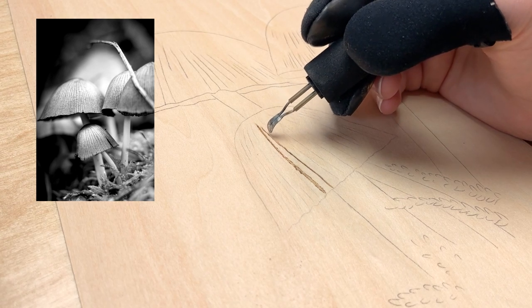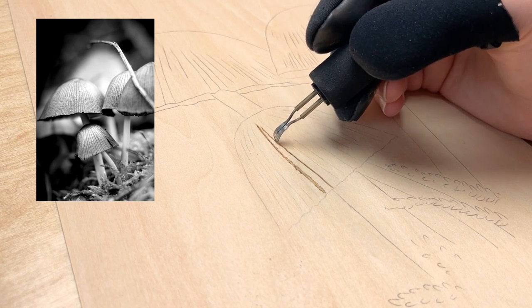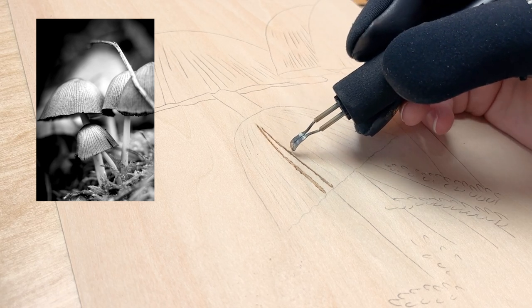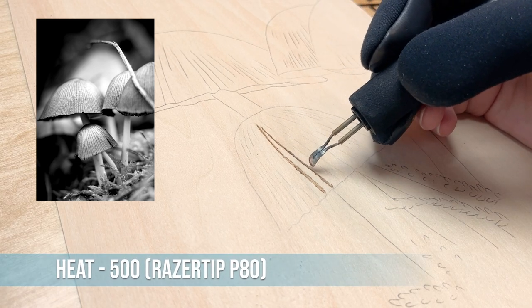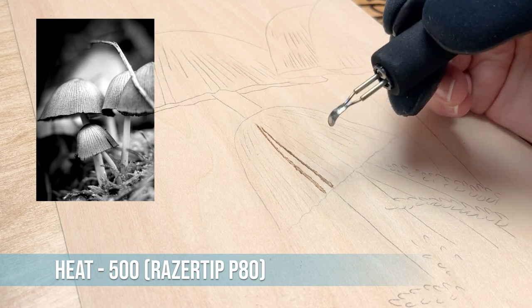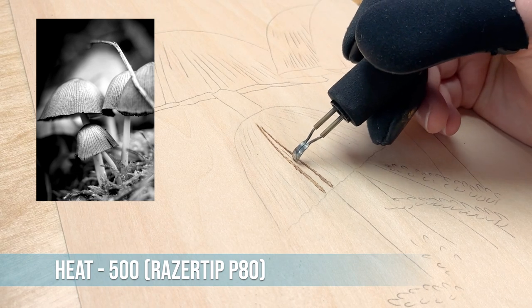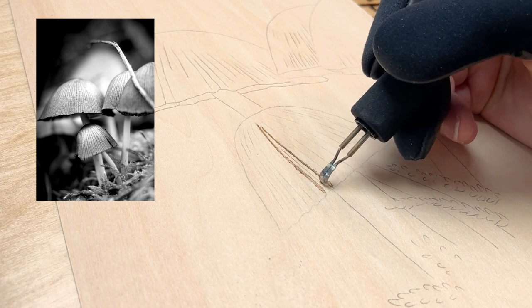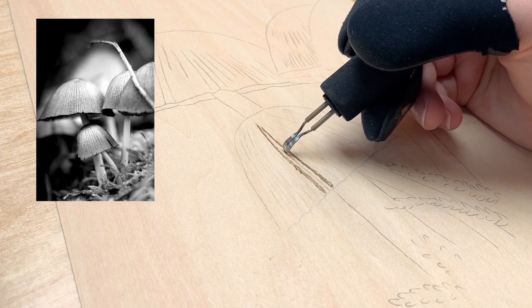I find that turning my shader tip upside down like this, so I can use that thin, fine metal edge, helps me get these lines better than using it flat—especially when I'm adding the jagged edges.